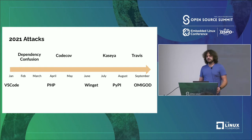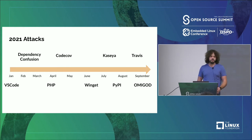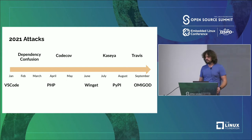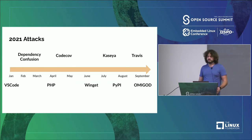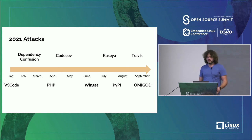Dependency confusion was another novel attack. A researcher, by confusing people about the name, namespace, and location packages would be downloaded from, was able to upload packages with internal names to public repositories. Package managers try so hard to download something for you that they'll fall forward and retrieve things from public managers first. The researcher got a whole bunch of prize money for this one too.